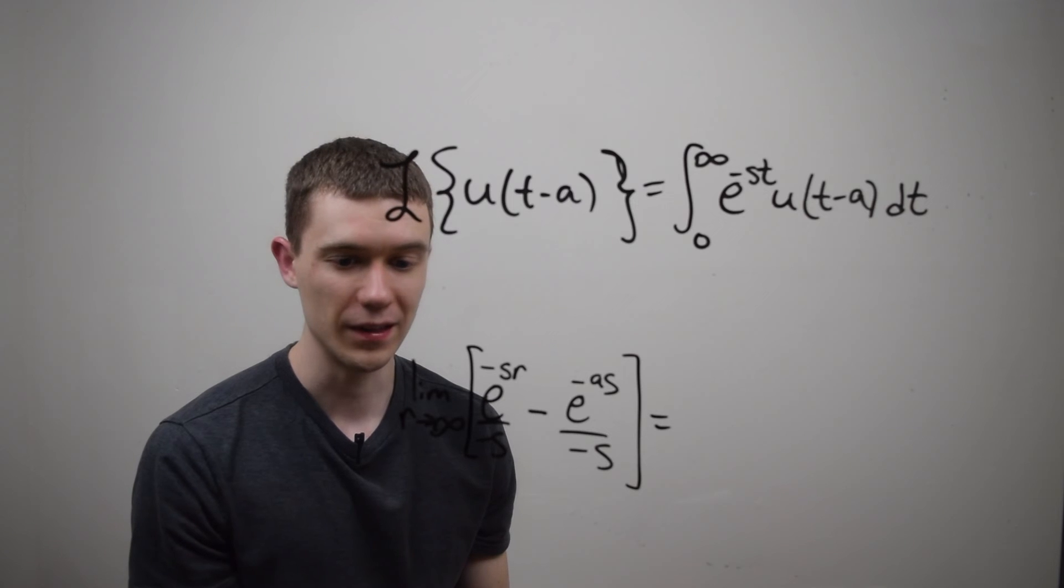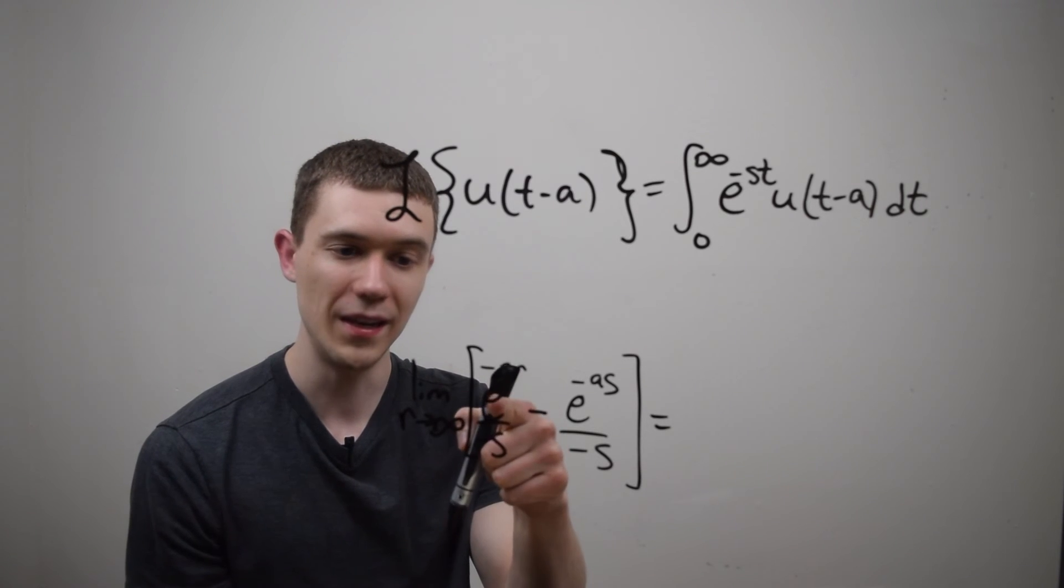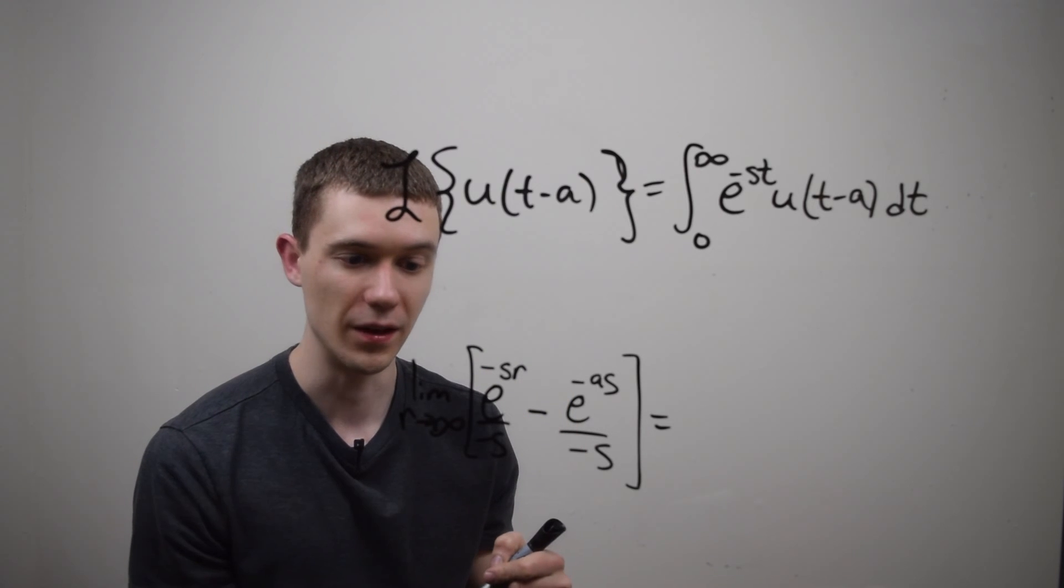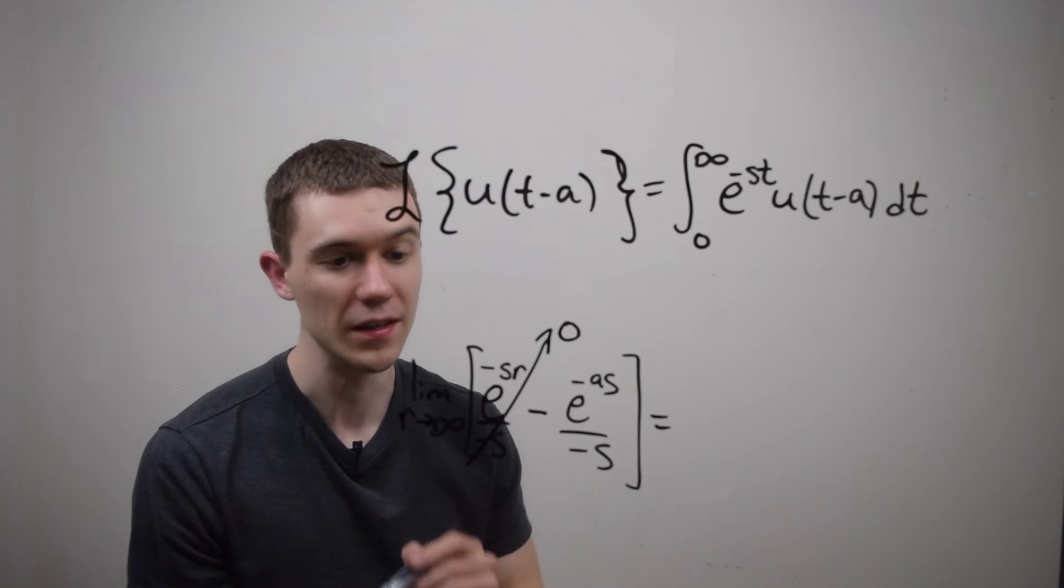How about evaluating this limit? As r goes to infinity, this would tend toward e to the minus s times infinity. And what I want is I want this piece to go away. I want this to turn into zero.